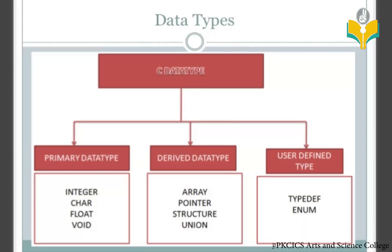Derived data types are again divided into four types: array, pointer, structure, and union. User-defined data types are divided into two types: typedef and enum.